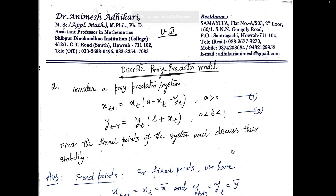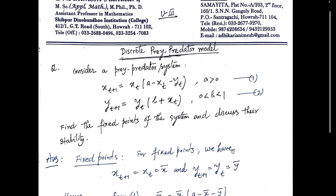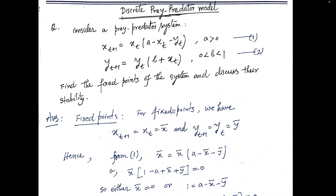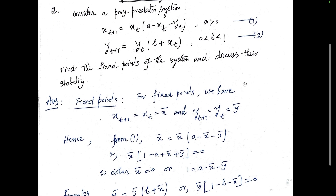The discrete prey-predator model question: consider a prey-predator system x(t+1) = x(t)[a - x(t) - y(t)], where a > 0, and y(t+1) = y(t)[b + x(t)], where 0 < b < 1. Find the fixed points of the system and discuss their stability.